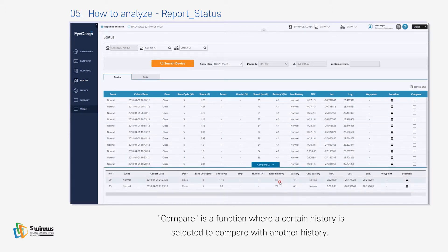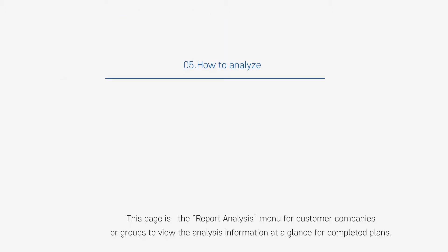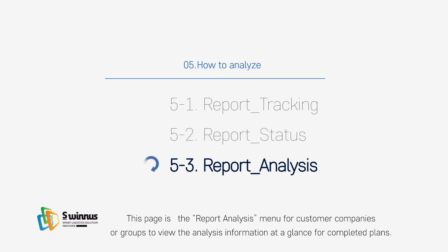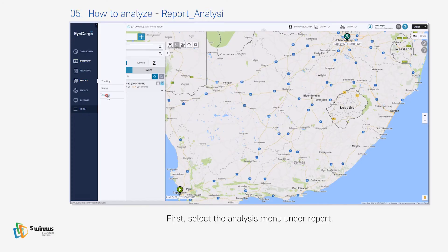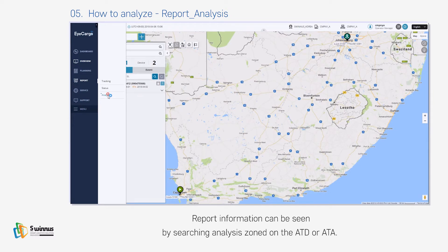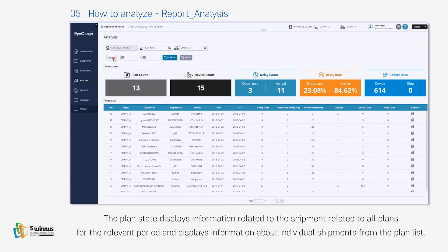The device history can be downloaded as a file by clicking the Excel icon at the top. This page is the Report Analysis menu for customer companies or groups to view analysis information at a glance for completed plans. Select the Analysis menu under Report — report information can be seen by searching analysis based on the ATD or ATA. The Plan State displays information related to all plans for the relevant period.